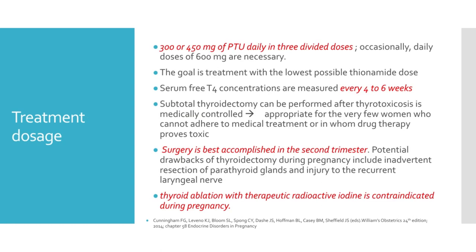The initial thionamide dose is empirical. For non-pregnant patients, the American Thyroid Association recommends that methimazole be used at an initial higher daily dose of 10 to 20 mg orally, followed by a lower maintenance dose of 5 to 10 mg. If PTU is selected, a dose of 50 to 150 mg three times daily may be initiated depending on clinical severity. For pregnant women, we usually give 300 to 450 mg of PTU daily in three divided doses, and occasionally daily doses of 600 mg are necessary. The goal is treatment with the lowest possible thionamide dose to maintain thyroid hormone levels slightly above or in the high normal range while TSH levels remain suppressed. Serum free T4 concentrations are measured every 4 to 6 weeks.